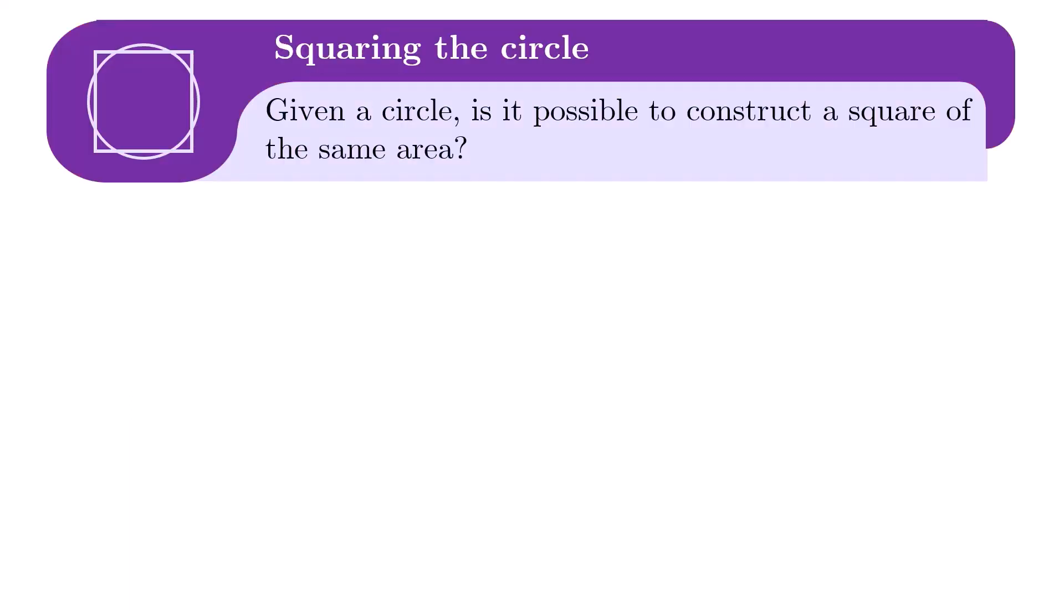Next, squaring the circle. Given a circle, is it possible to construct a square of the same area? Well, if we start with the unit circle which has area pi, then the question is whether square root pi is constructible.